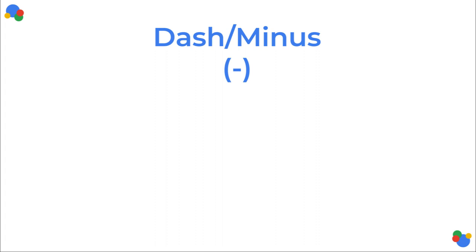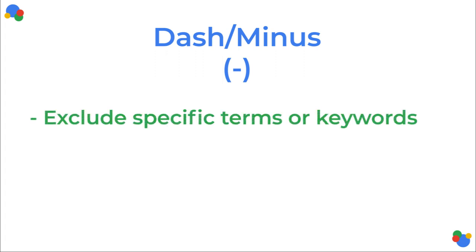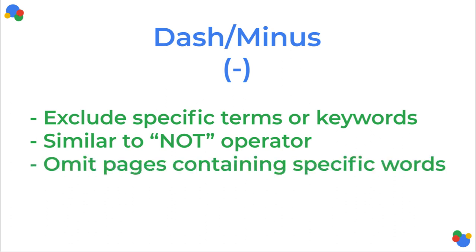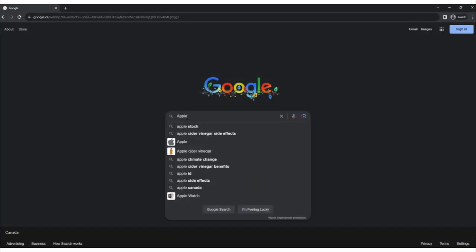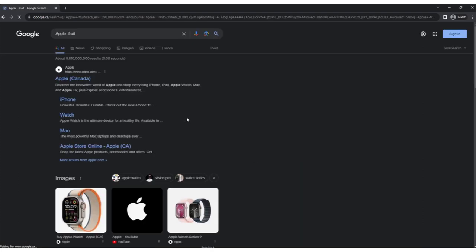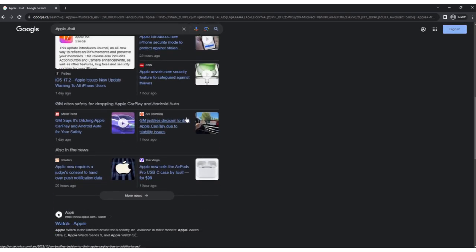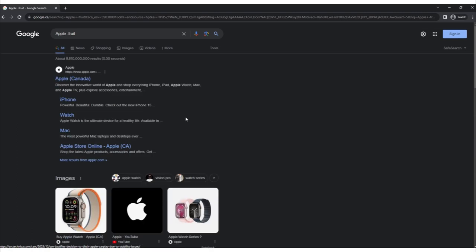The minus operator. The minus sign is used to exclude specific terms or keywords from your search results, similarly to the NOT operator. By adding a minus sign before a word, you tell Google to omit the pages that contain that word. This is useful when you want to narrow your search results by excluding irrelevant information. For example, if you're searching for information about Apple the company but want to exclude results related to the fruit, you can use 'apple -fruit' as your search query. Google will then return results pertaining to the company Apple while excluding pages that mention the word in the context of the fruit.